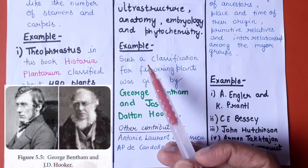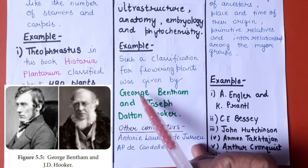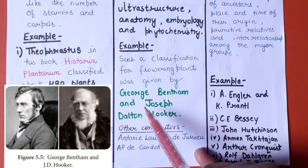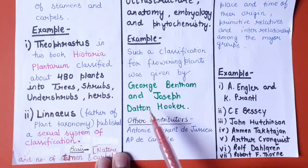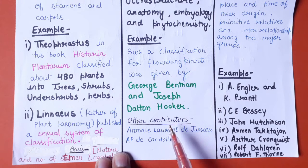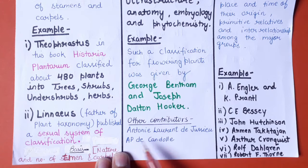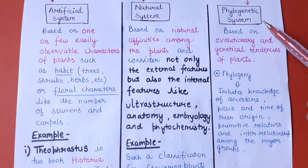The natural system of classification was given by George Bentham and Joseph Dalton Hooker — we will take up that topic in detail in our next video. Other contributors to the natural system of classification include Antoine Laurent de Jussieu and A.P. de Candolle. Now coming to the third system — phylogenetic system of classification.